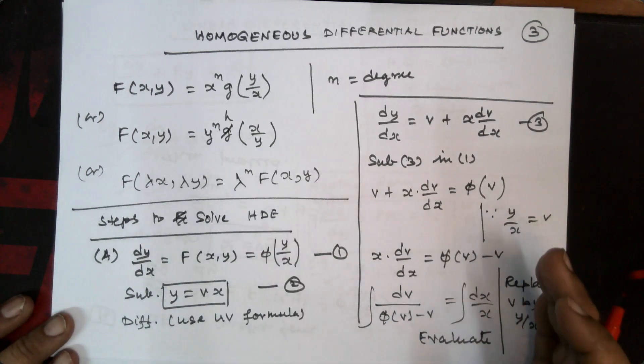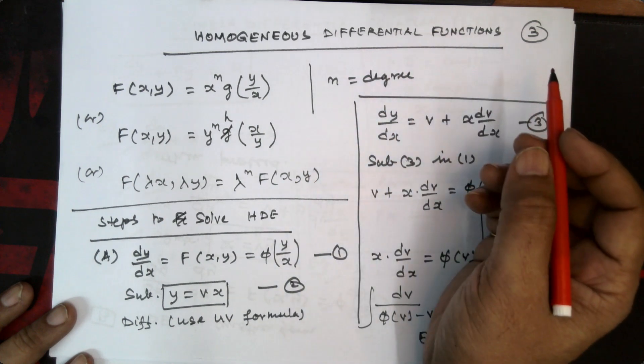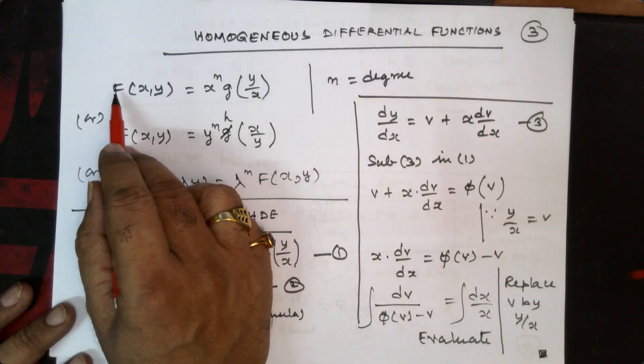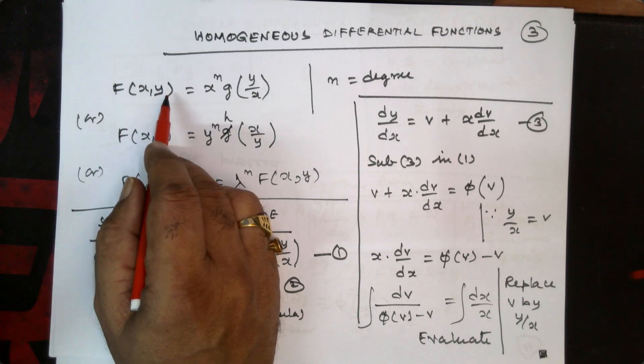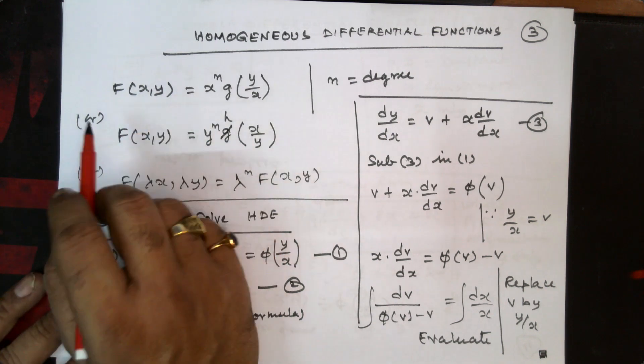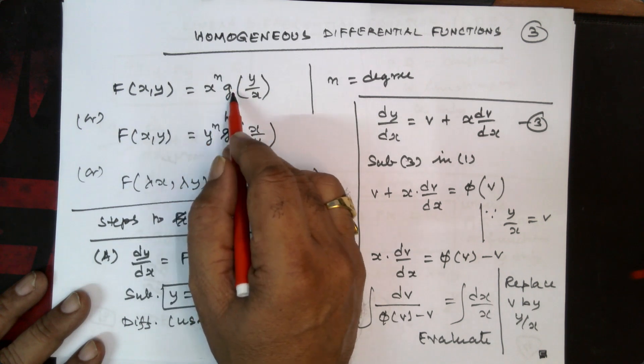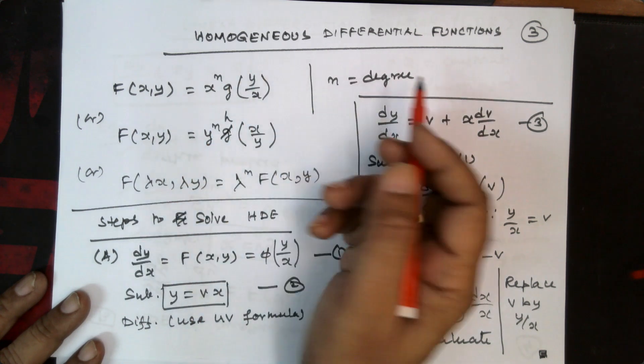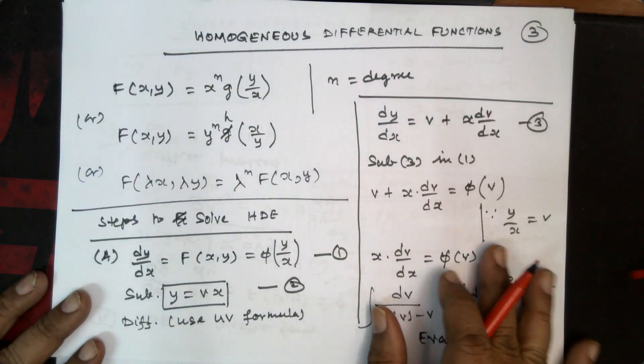Now we will go to the third form, that is homogeneous differential functions. Let me consider f of x, y, a function of x and y, equals x power n into g of y by x, where n is the degree of this differential equation.